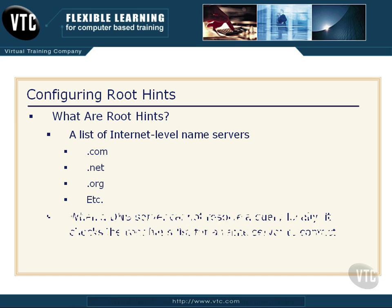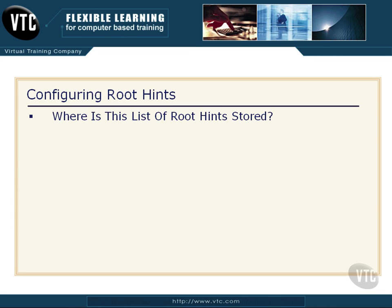Where are these Root Hints that the server is going to refer to? They're stored on your domain controller, or wherever you have DNS installed. On a Windows domain controller, it's going to be in the system root, the System32 folder, then the DNS folder, and then it's a file called cache.dns.